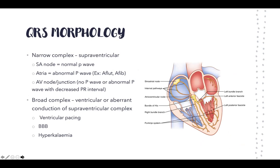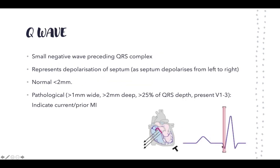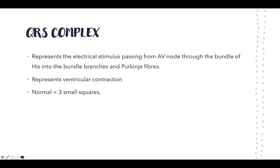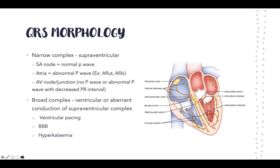So how does the QRS complex usually look? It can be quite narrow, or sometimes quite broad — much wider than usual. When it's narrow, you know the wave is coming from the supraventricular region, above the ventricle — the signal is originating above the ventricles and depolarizing them in an appropriate fashion.